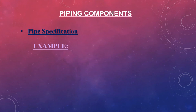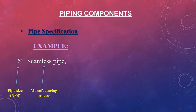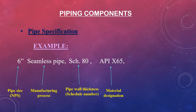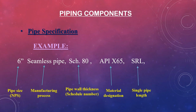Here is an example of a complete pipe specification: 6 inches for the pipe size; seamless as the manufacturing process; Schedule 80 as the designator for a pipe with a wall thickness of 11 millimeters; material grade X65 according to API 5L standard; required pipe joints of 6 meters length, single random length; and the pipes shall have beveled ends.